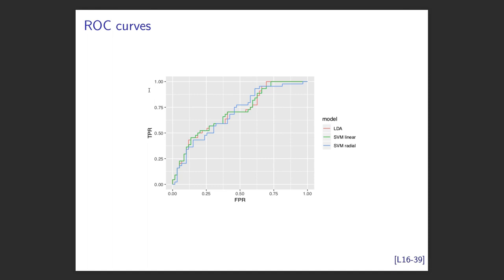Hopefully you now feel confident enough to try SVM with different kernels, tune it, and compare to LDA, QDA, and other classifiers. If the same predictors keep coming up across methods, great. But if you change method and everything suddenly changes, you're probably modelling noise, not signal. That's Support Vector Machines. Next week we start unsupervised learning: PCA, clustering, and MDS (multi-dimensional scaling).